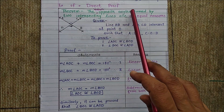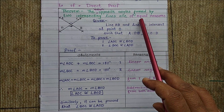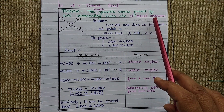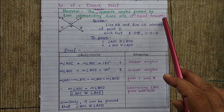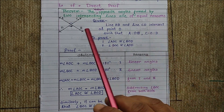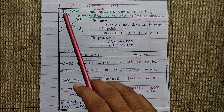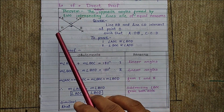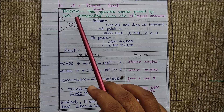The vertically opposite angles are of equal measure. When two lines intersect, there are four angles made by those two intersecting lines.